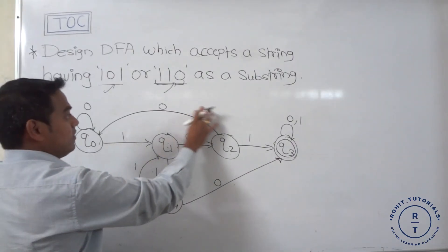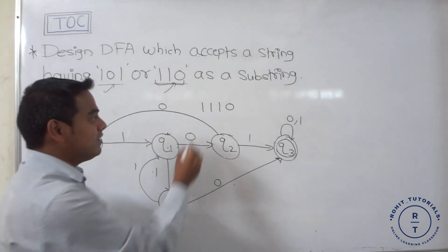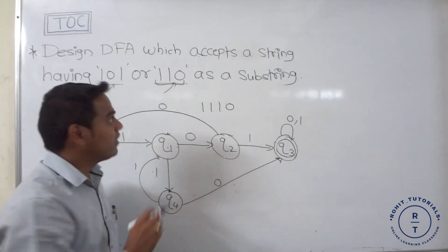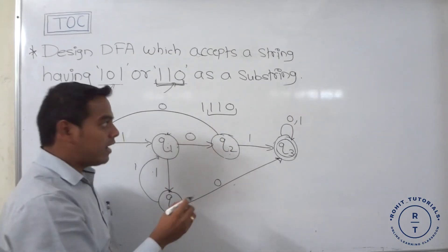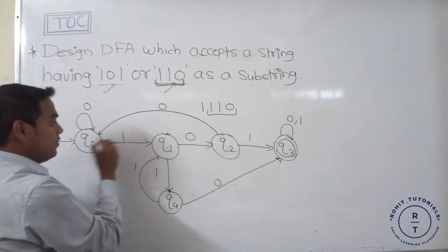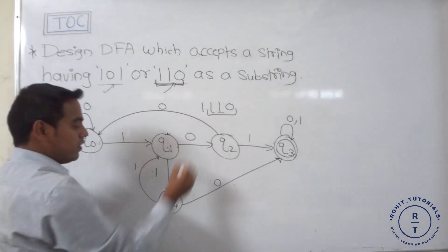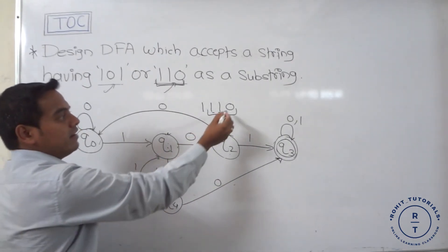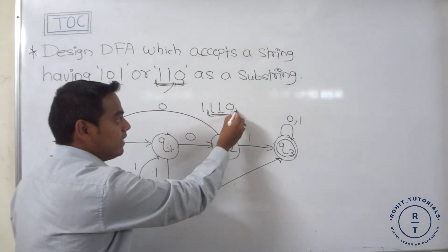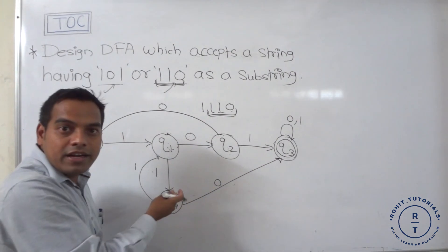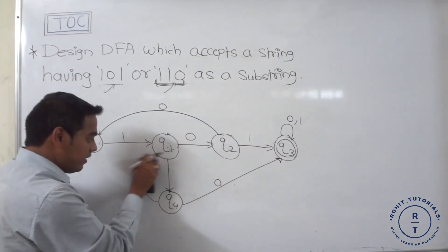Consider the string 1110. This string should be accepted because it contains the substring 110. Tracing with no self-loop at Q4: 1 goes to Q1, 1 goes to Q4, 1 goes to Q1, 0 goes to Q2 — and our automata doesn't accept it. So the drawn transition is incorrect and needs to be fixed.